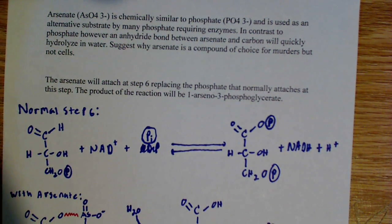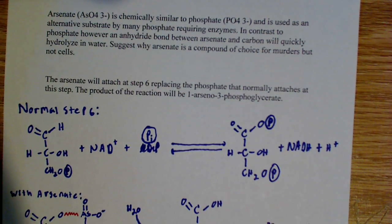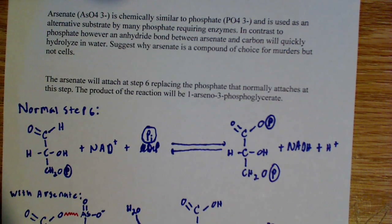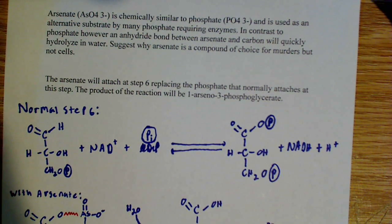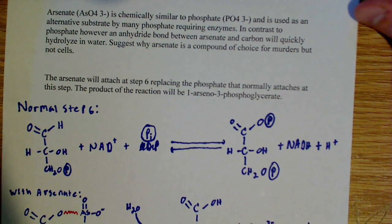Phosphate, however, has an anhydride bond between the arsenate and carbon, and that will quickly hydrolyze in water. It will very rapidly hydrolyze in water, much more rapidly than thioesters and other such high energy bonds.